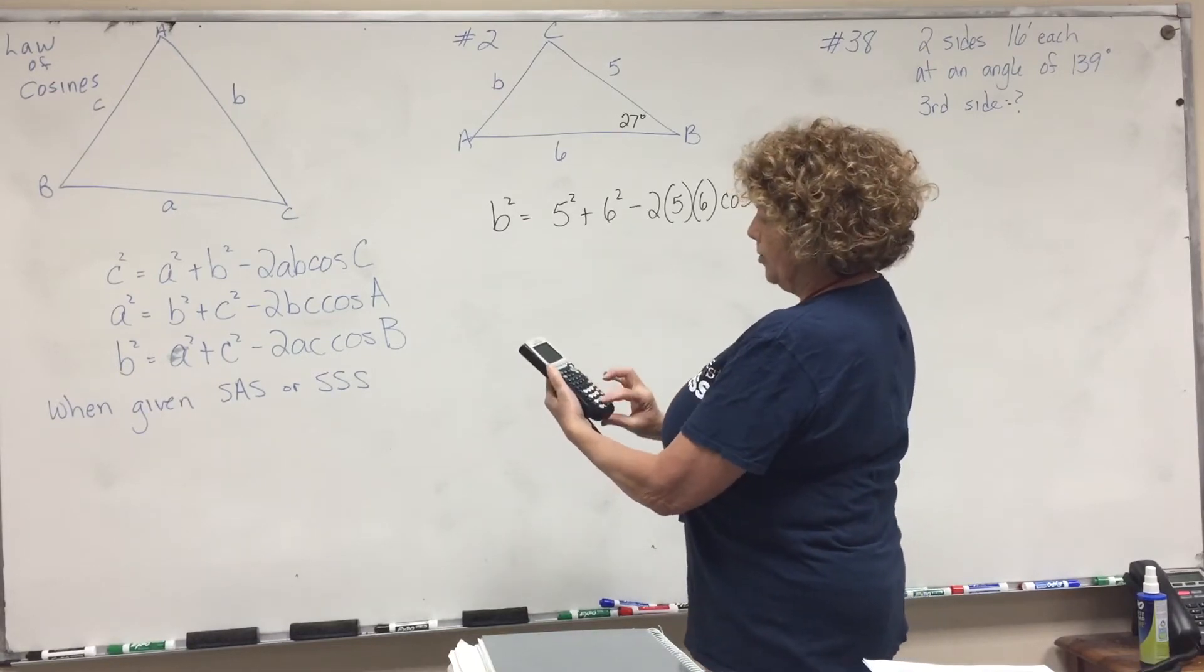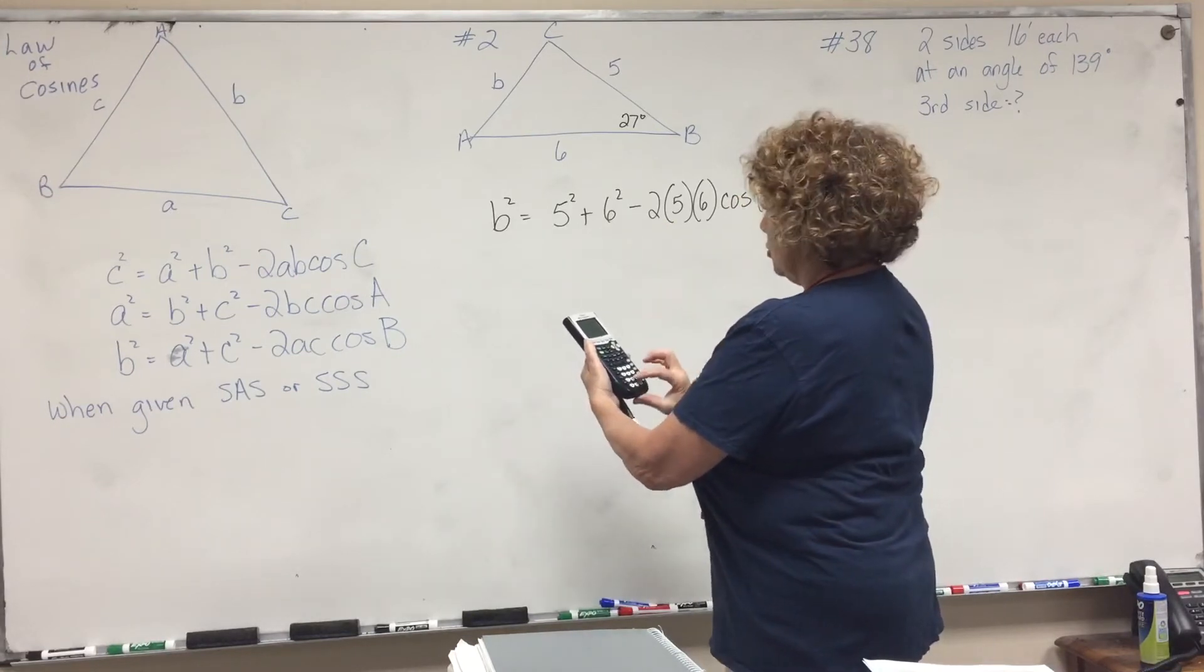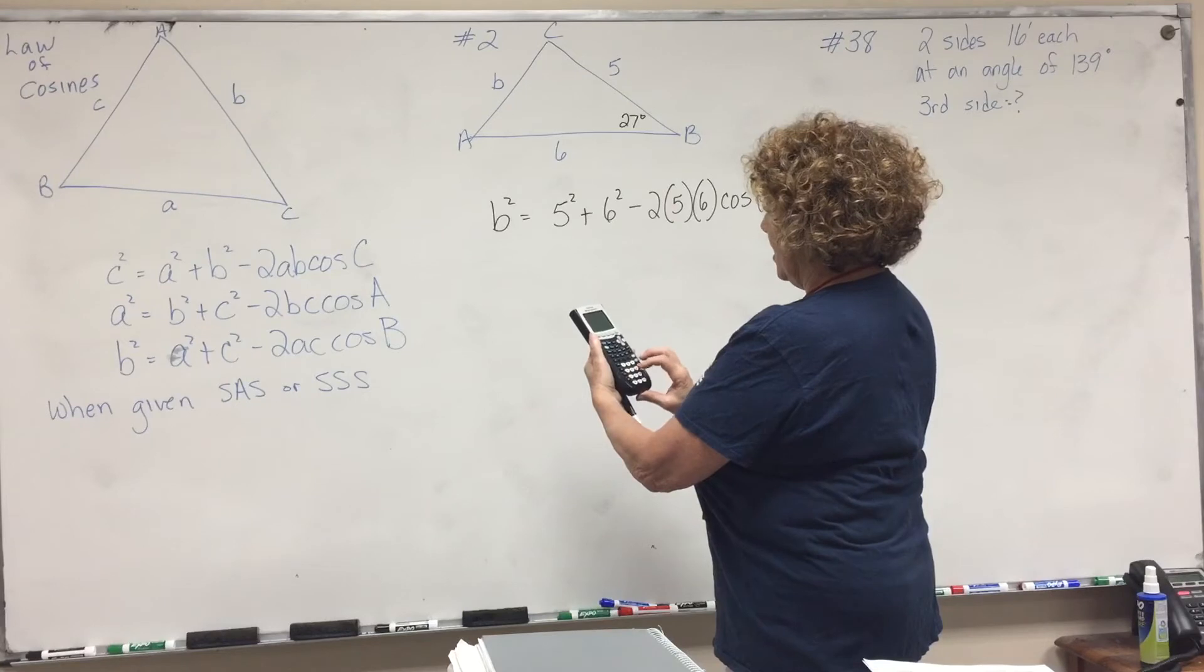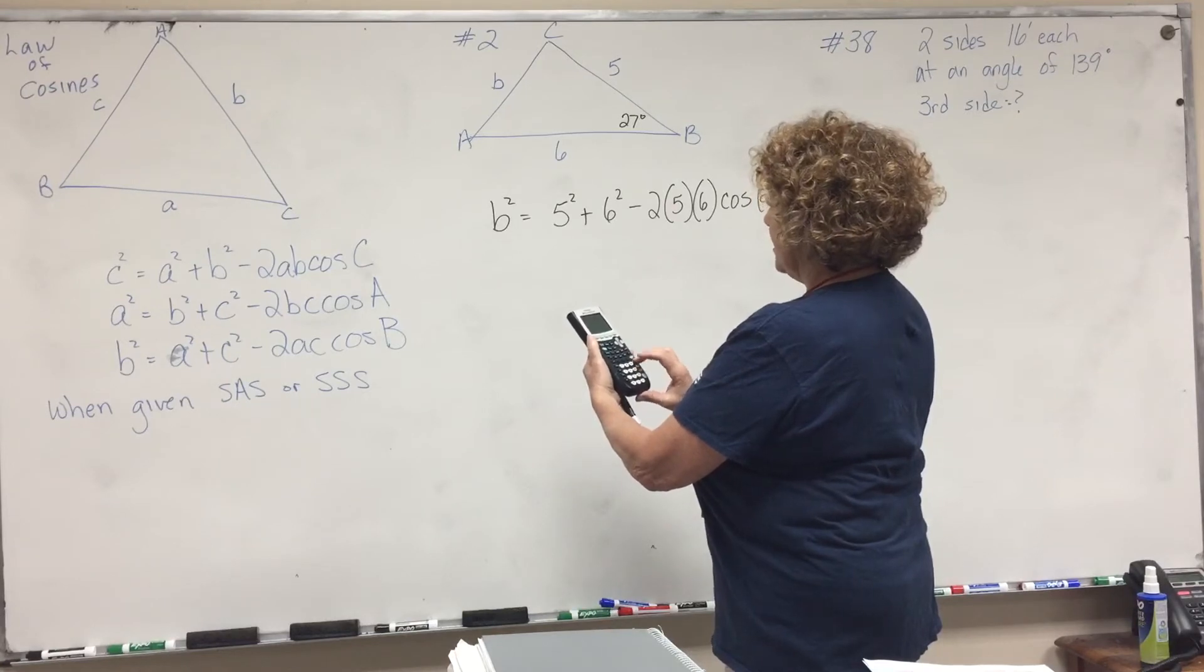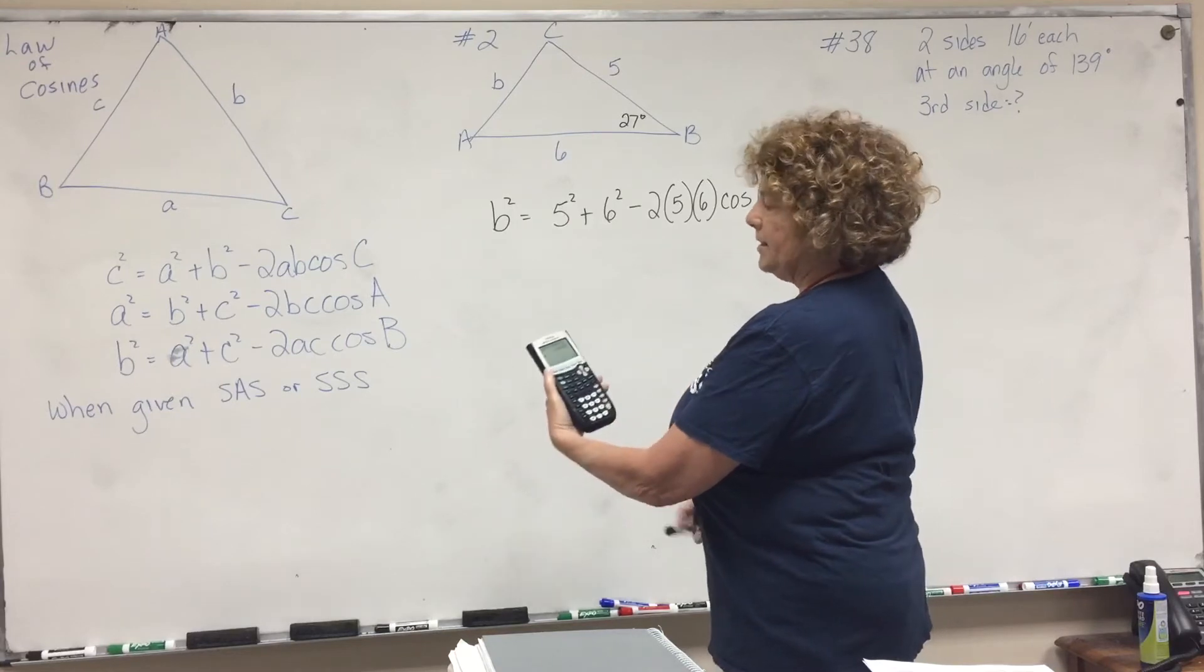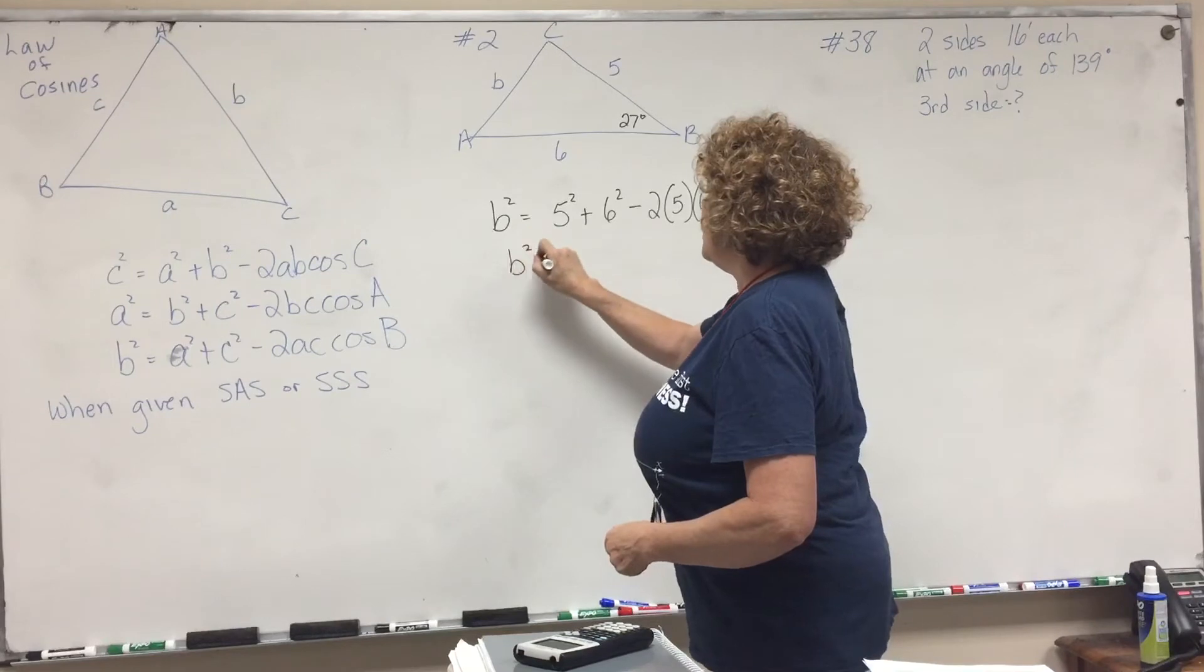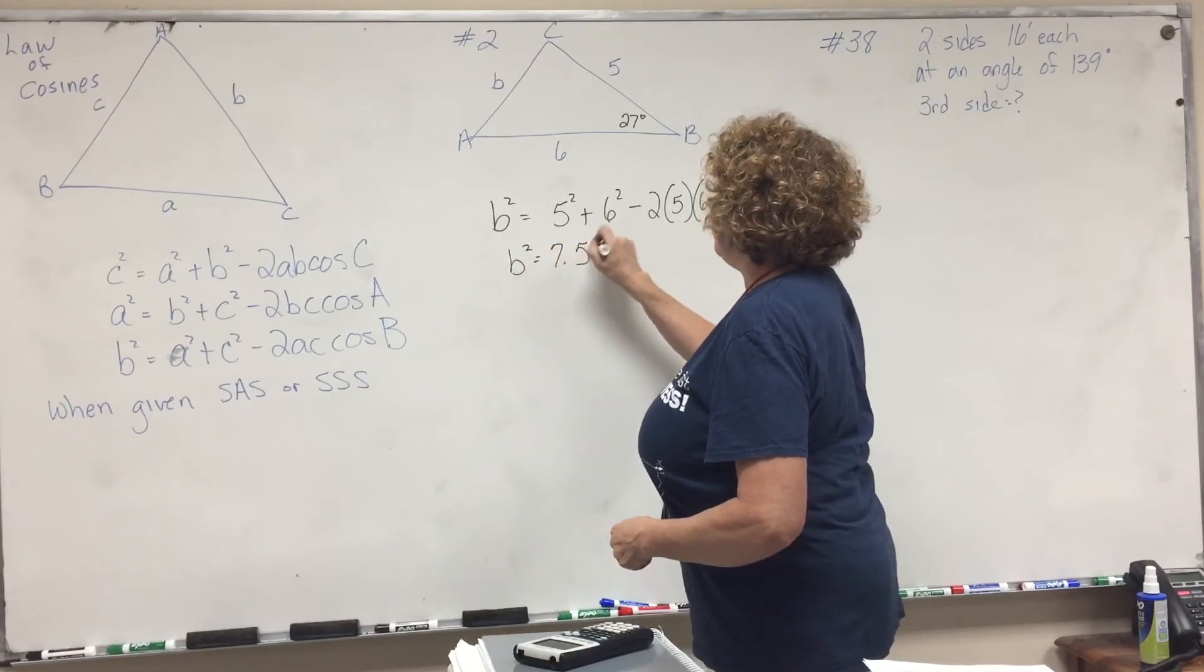Let me start again. 25 plus 36 minus two times five times six times cosine 27. And we come out with 7.54. So b squared equals 7.54.